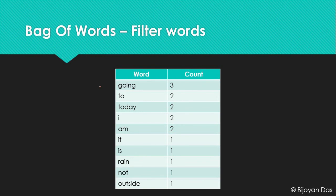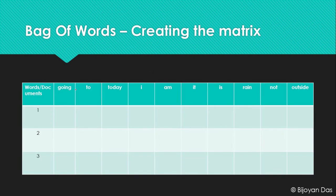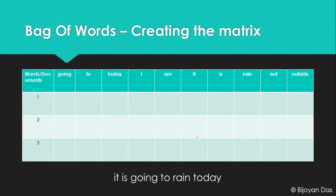Using this filtered dictionary we are going to create a matrix — the bag of words model. The matrix has all the frequent words as columns: 'going', 'to', 'today', 'i', 'am', 'it', 'is', 'rain', 'not', 'outside'. In the rows we have the different documents — document one, document two, and document three. Now let's find out how we fill out this matrix by scanning each sentence word by word.